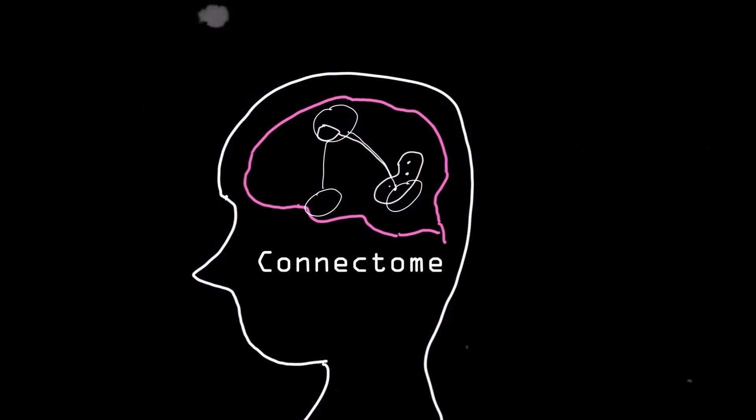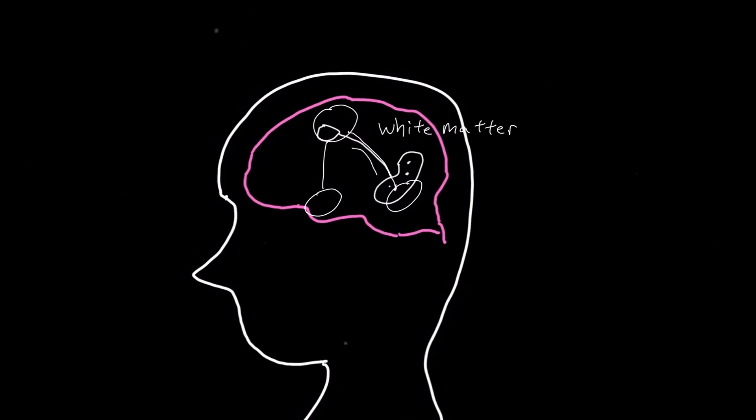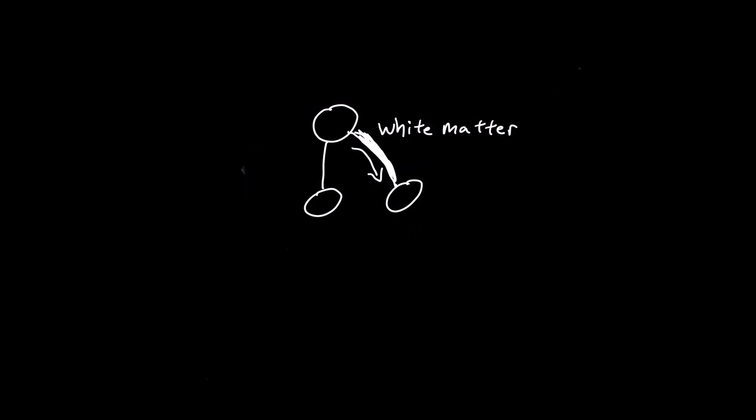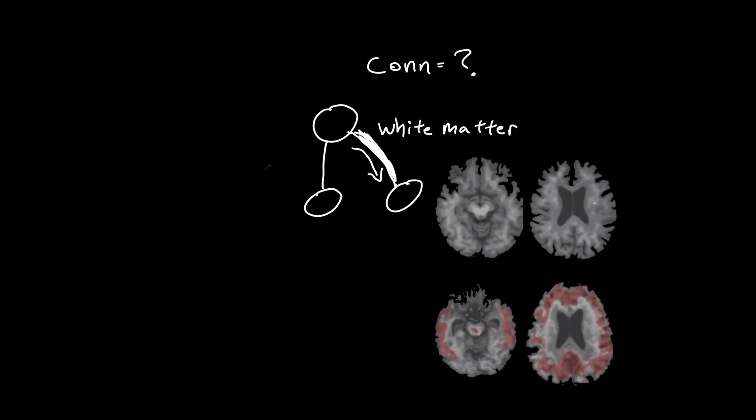In our case, we're modeling these connections as white matter pathways, which transmit signals. Our goal here is to figure out how connected each region is to each other, and to summarize this connectedness as a number that we can use to determine how badly dementia has wrecked the brain's connectivity.